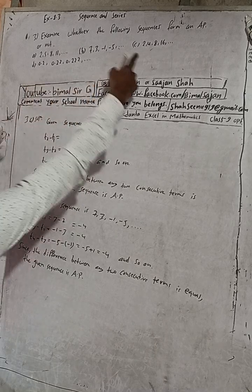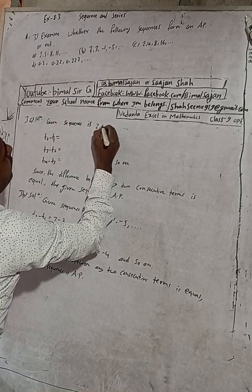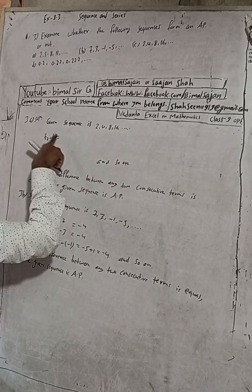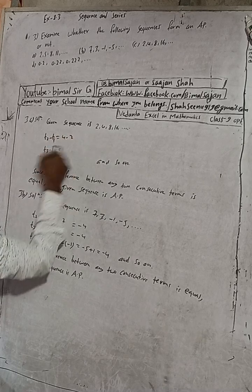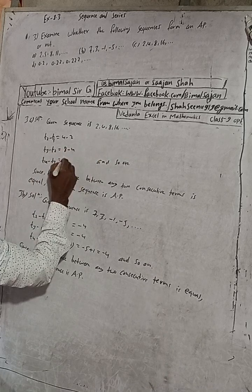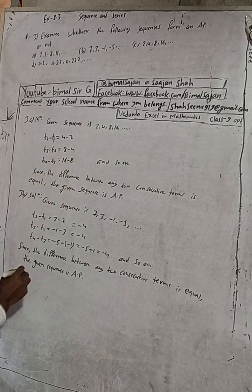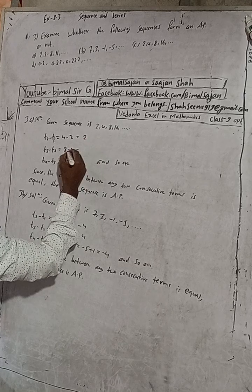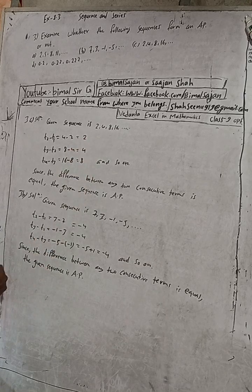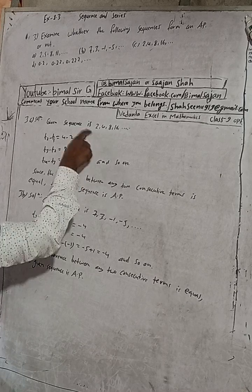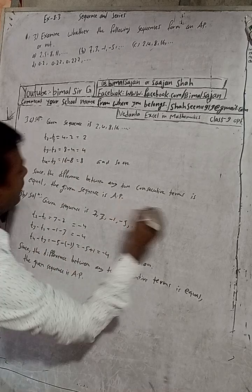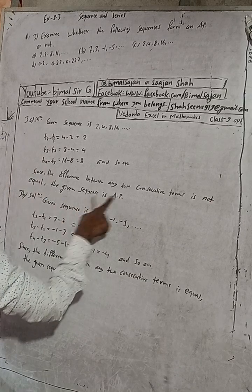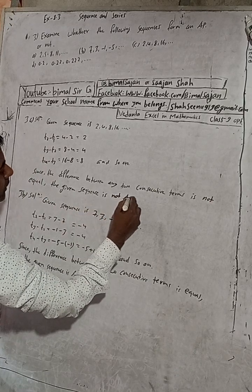For part C, the given sequence is 2, 4, 8, 16, dot dot dot. The difference between consecutive terms: T2 minus T1 is 4 minus 2 = 2, T3 minus T2 is 8 minus 4 = 4, T4 minus T3 is 16 minus 8 = 8. We can see the differences are 2, 4, 8 — not equal. Since the difference between any two consecutive terms is not equal, the given sequence is not an arithmetic progression.